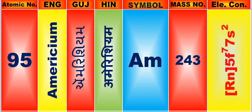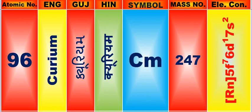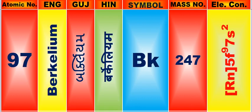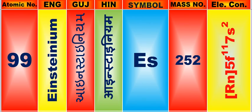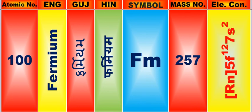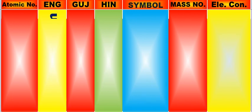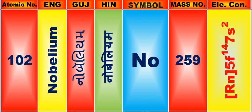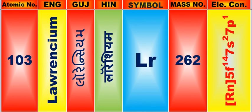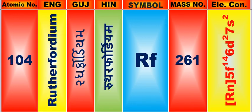Atomic number is 95, name of atom is Americium. Atomic number is 99, name of atom is Einsteinium. Atomic number is 100, name of atom is Fermium. Atomic number is 101, name of atom is Mendelevium. Atomic number is 102, name of atom is Nobelium. Atomic number is 103, name of atom is Lawrencium.